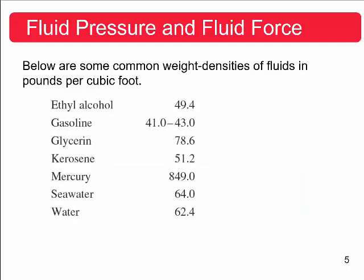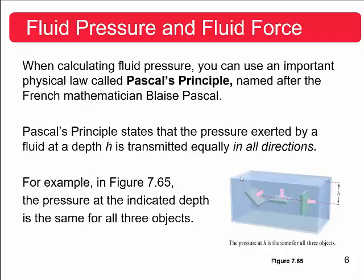So let me show you on this slide right here, I have some common weight densities of fluids in pounds per cubic feet. So, you know, for example, just going down the list, you know, the most common one will deal with water. So this is the weight density of water. But then if you look at the weight density of mercury, it's vastly different. It's a much, much heavier, much denser type of fluid.